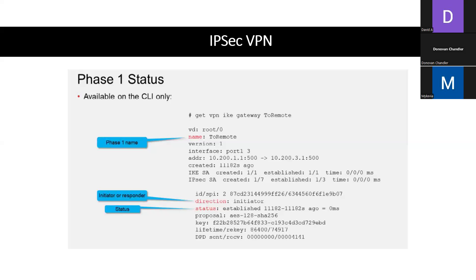Take a screenshot, know what it looks like, and understand: if you ever need to check phase one to see if it's up and troubleshoot phase two, you can check this first. The command is 'get vpn ike gateway' followed by the name you gave it for phase one.